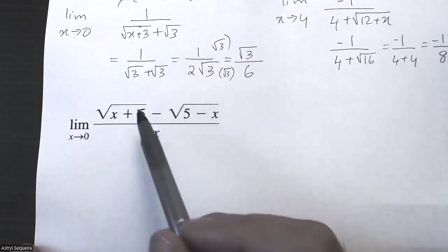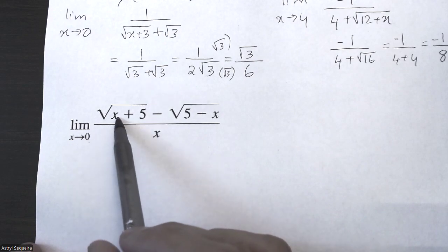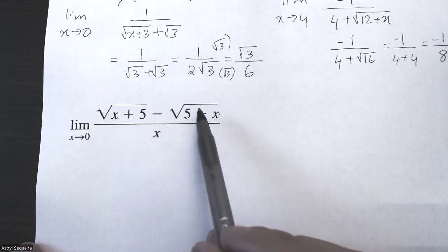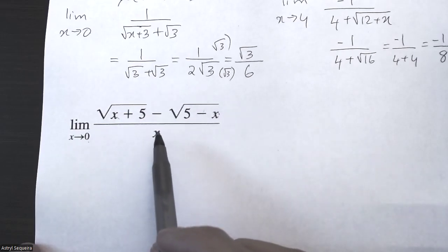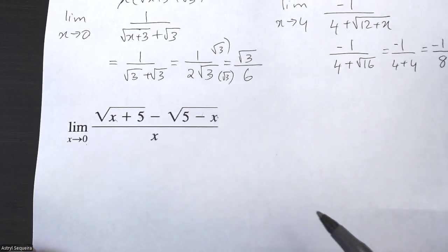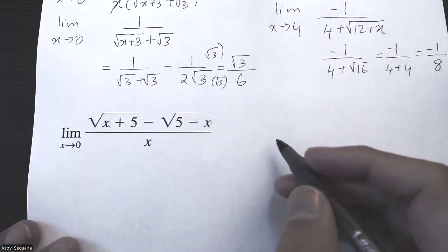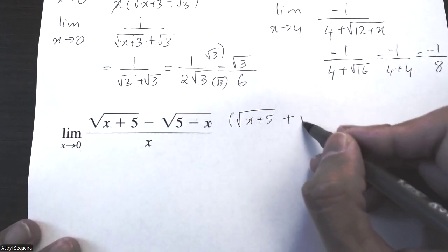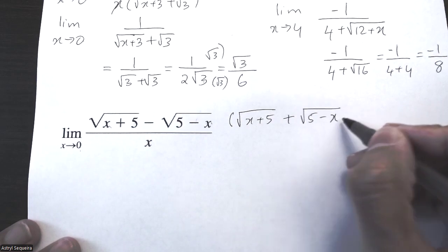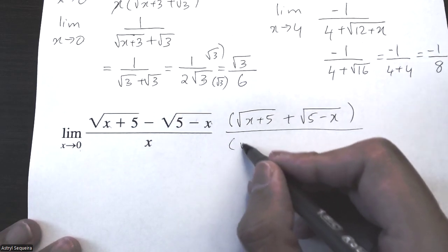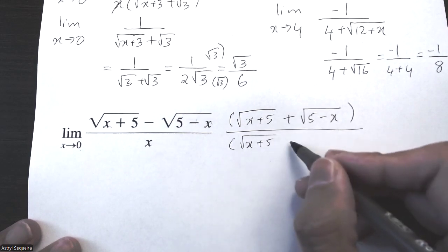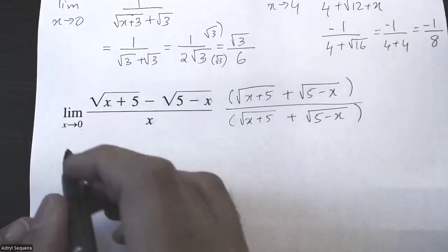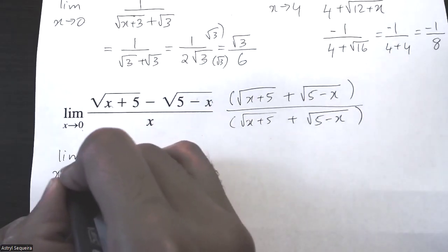Let's go to the third and final question — the exact same idea, just a bit more practice. If I sub in zero on top: zero plus five is five, root five minus root five is zero, so I have zero on top and zero on the bottom. Zero divided by zero is indeterminate, so I have to rationalize. I'm going to multiply the top and bottom by root of x plus five plus root of five minus x.